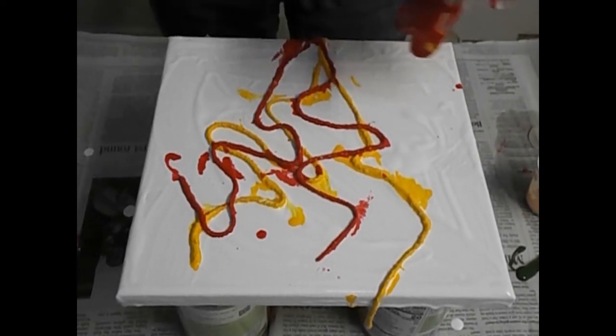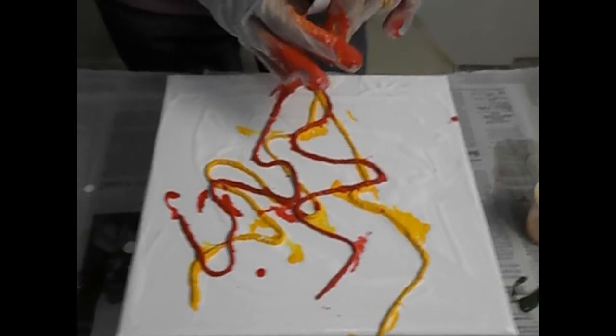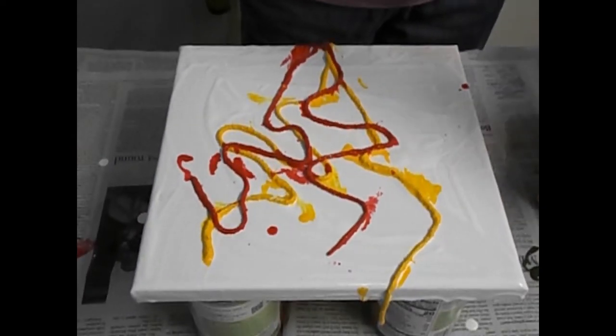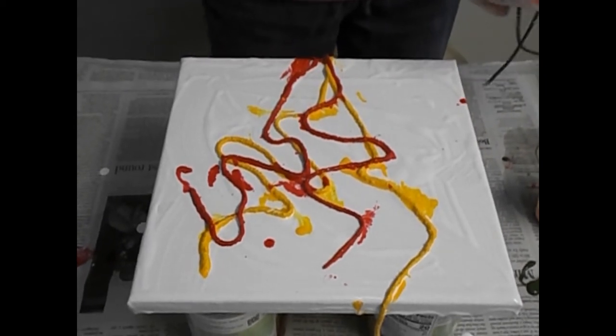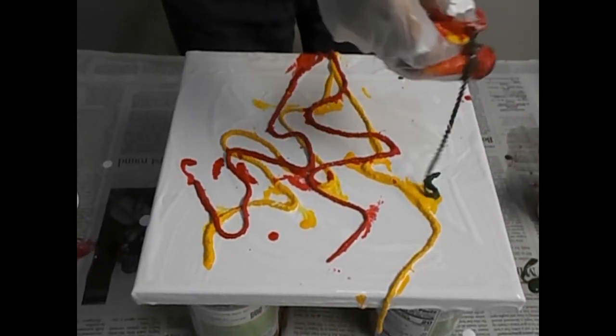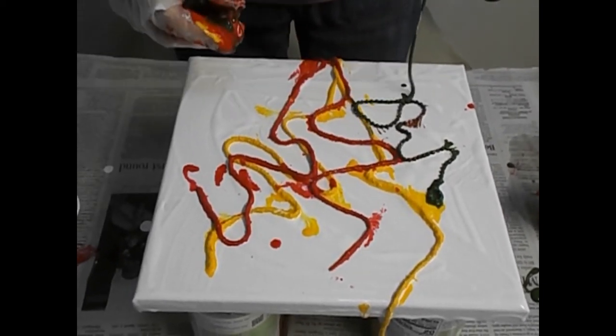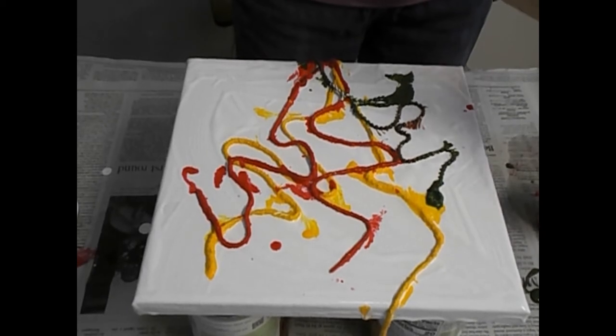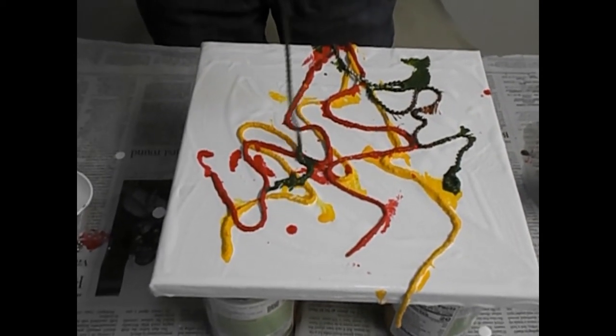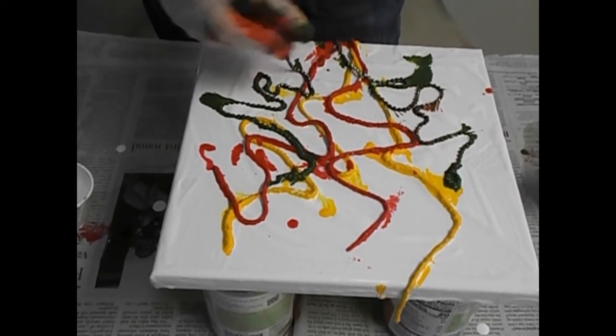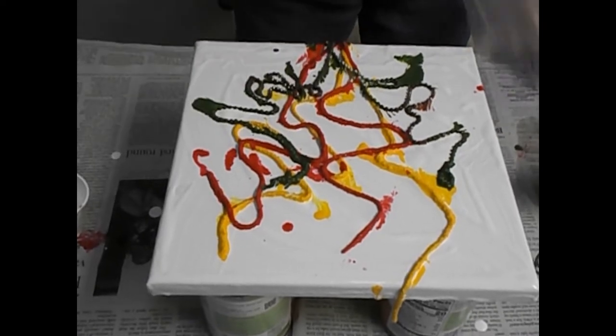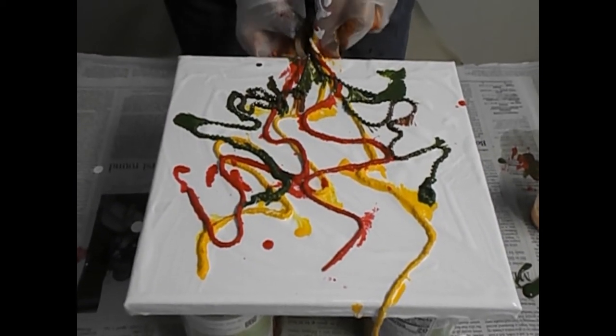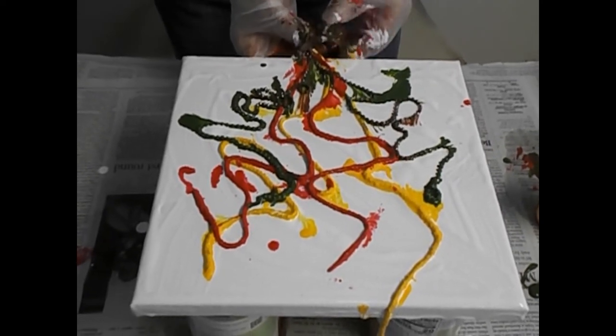Now, in the green container, I have a chain instead of yarn. It will make a different texture. Now, I have a little plastic washer, and I'm going to pull all the yarn and chains through that.